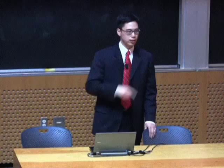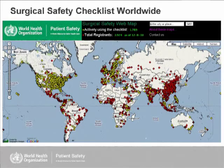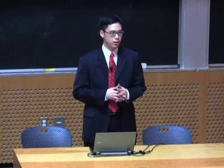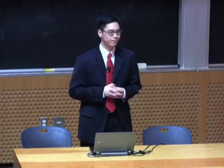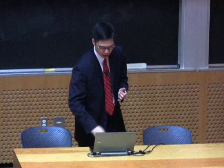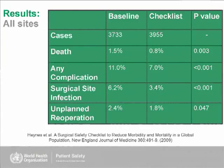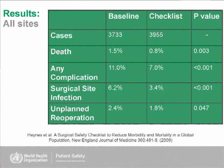Have viewers analyzed which items on the checklist might be most critical? A lot of these complications are infectious — surgical site infections, pneumonias. We've done some sub-analyses, and it looks like there have been changes in both infectious and non-infectious complications. One criticism is that the result is all because we're asking people to give antibiotics on time — something not being done very frequently. That may be a large component, but there are other parts of the checklist contributing to the effect as well.